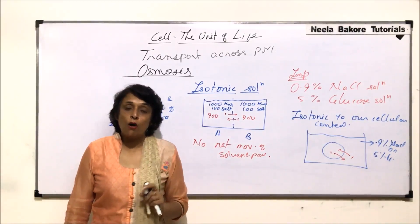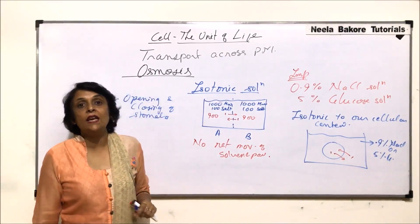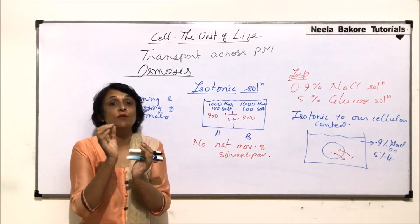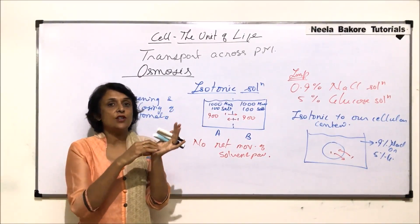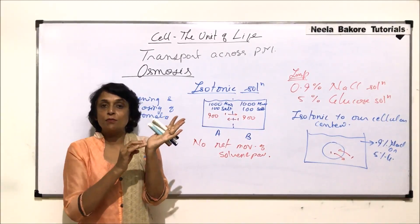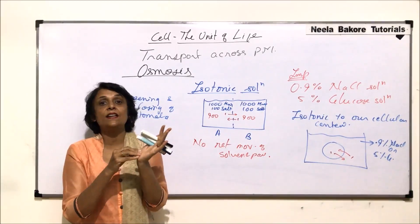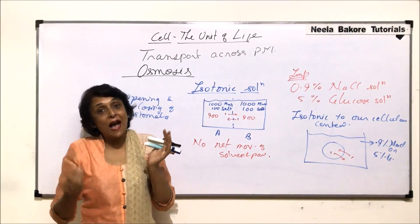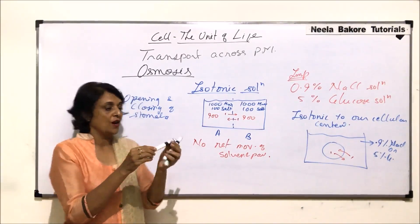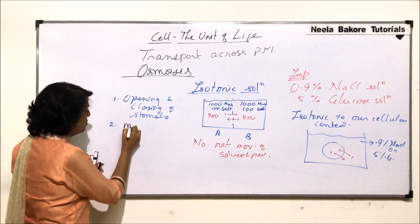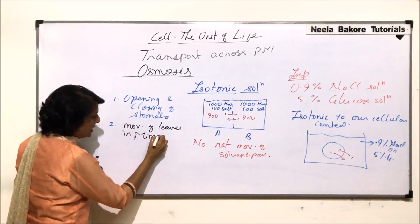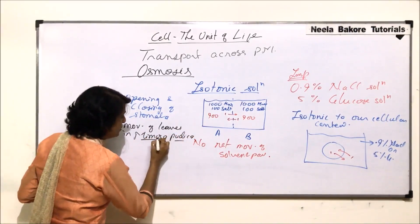Another application is the movement seen in Mimosa pudica, the touch-me-not plant. At the leaf base there is a swollen structure called the pulvinus. When the leaf receives a touch stimulus, it travels to the pulvinus, where the inner cells undergo exosmosis — water moves out, the cells become flaccid, and the leaves fold closer together.